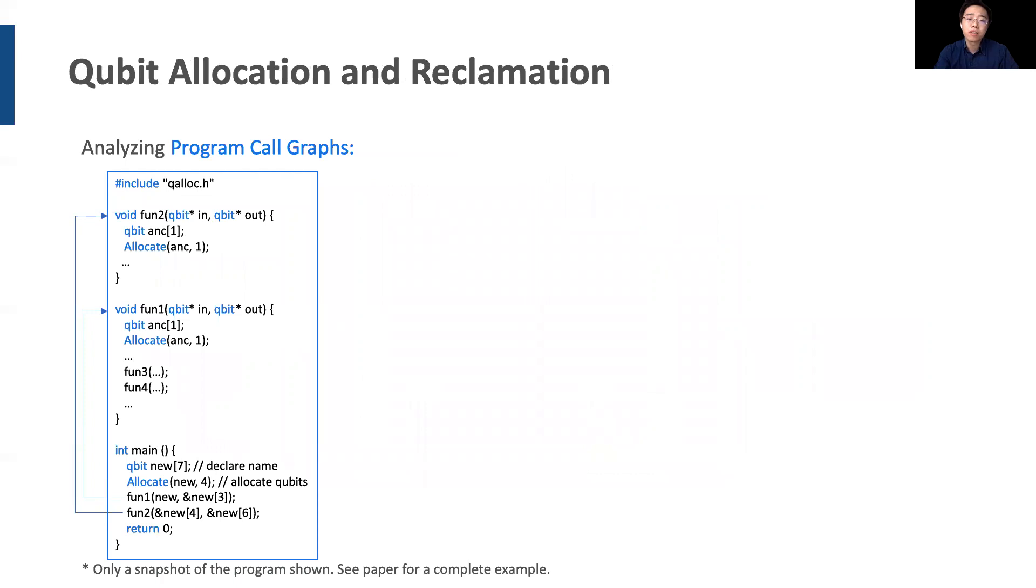We illustrate how the square algorithm works on an example program. We start by drawing its program call graph. By inspecting the program, we found that the main function calls function 1 and 2, and function 3 and 4 are called within function 1. So we can draw the call graph like this. Each function allocates some number of ancilla, so we can choose whether or not to reclaim them at the end of each function.